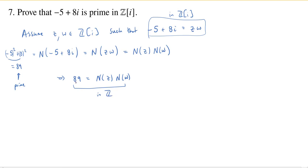But we know that 89 is prime. And because 89 is prime, that tells you one of these two numbers has to be 1. So N(z) equals 1 or N(w) equals 1.